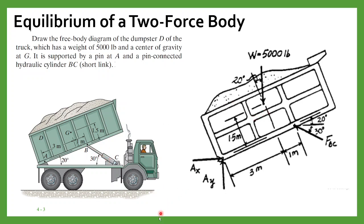This is the free body diagram. The weight acts vertically downward, so the weight force is shown here. This angle is 20 degrees. At the pin connection at A we have a reaction force with unknown direction, giving two components AX and AY. At point B we have a reaction force FBC with known direction, and that angle will be 20 degrees plus 30 degrees. This is the free body diagram of the problem.